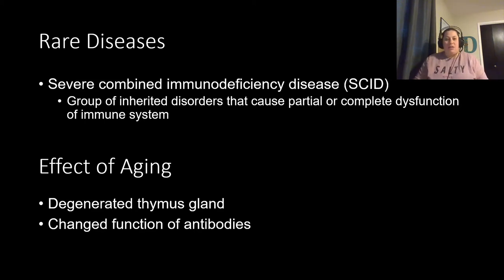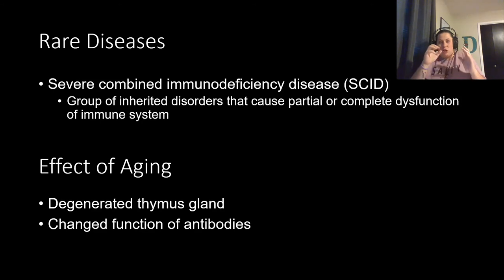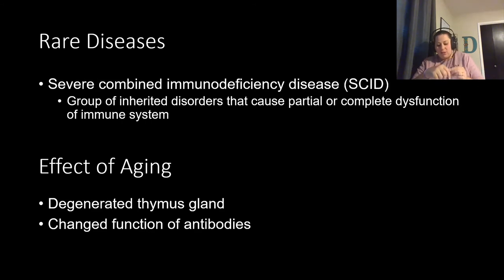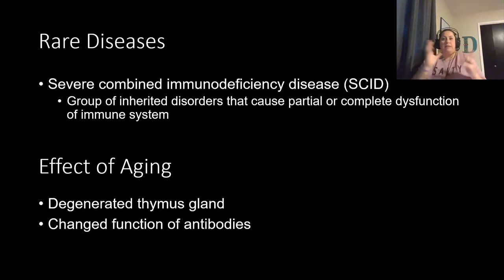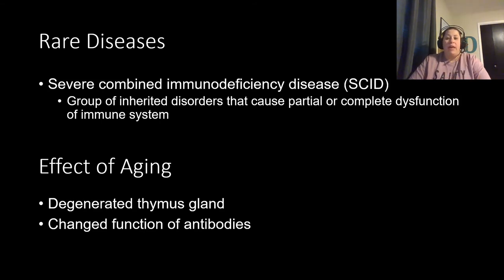With aging, two main things happen to the immune system. First, the thymus gland begins to atrophy after puberty, slowly getting smaller, which ultimately affects T cell production. Second, antibody function changes due to poor nutrition, lack of exercise, medications taken in old age, and stress or anxiety. The longer we live, the more these effects wear on the body's immune system. If you have any questions or concerns, please let me know — I'm here to help you.